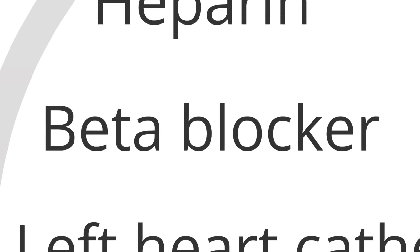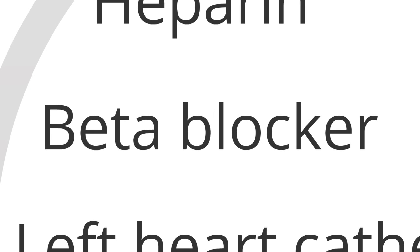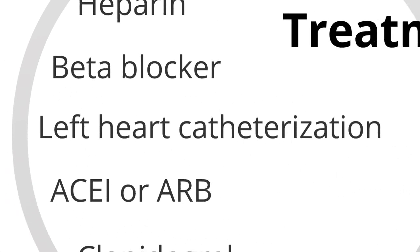Another medication in the checklist for acute coronary syndrome patients are beta blockers. A patient in acute coronary syndrome is in pain, so they increase their sympathetic drive, causing their heart rate to beat faster and increasing oxygen demand. Beta blockers will decrease their heart rate, thereby decreasing oxygen demand. Once you've heparinized the patient and given aspirin, the patient should be taken for a left heart catheterization.